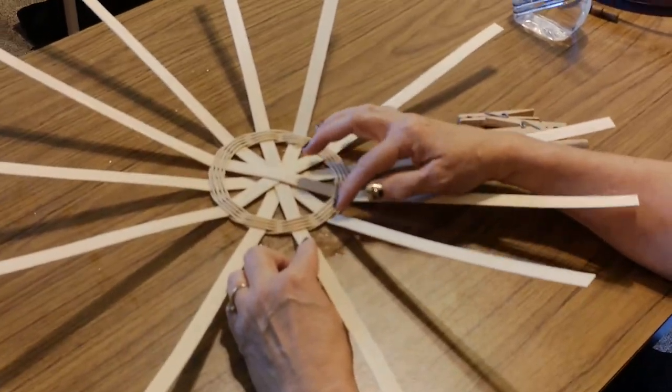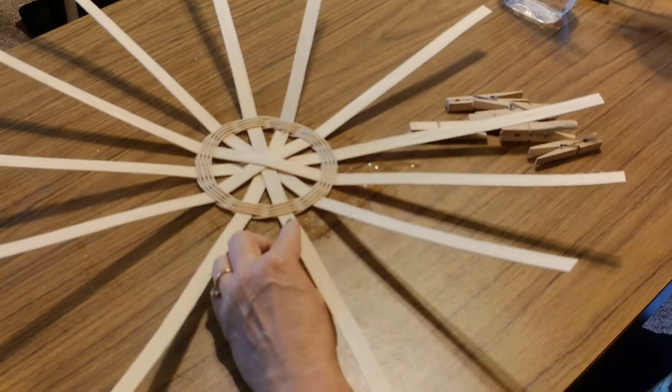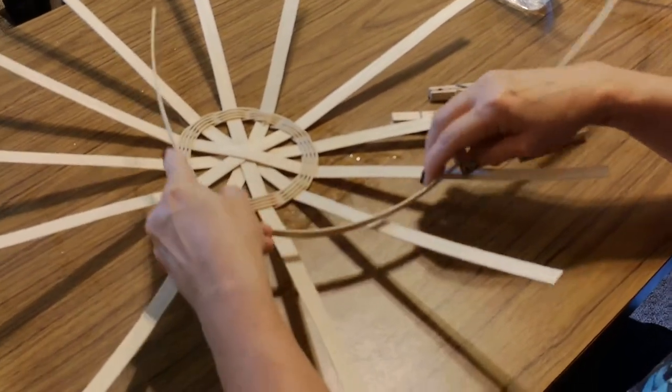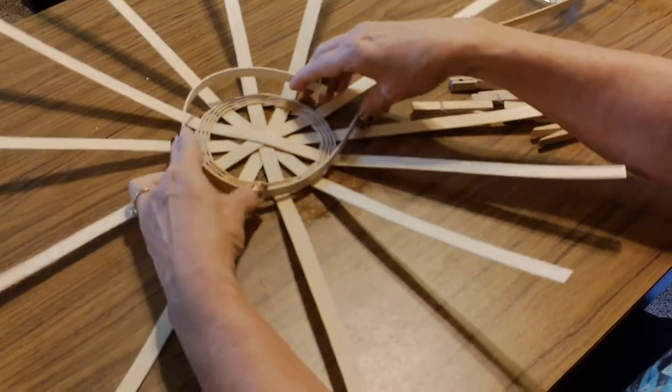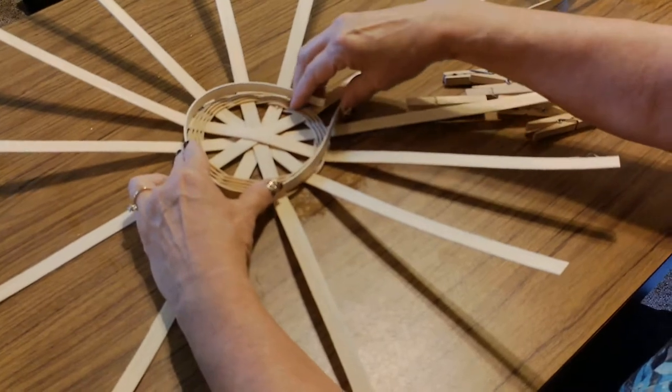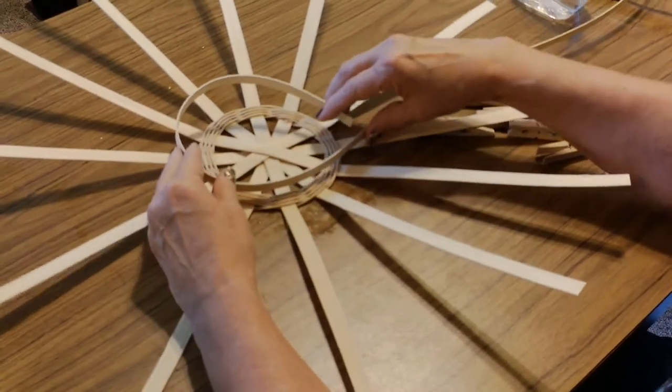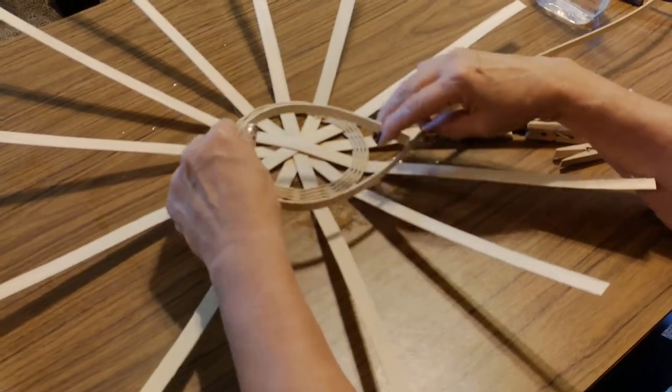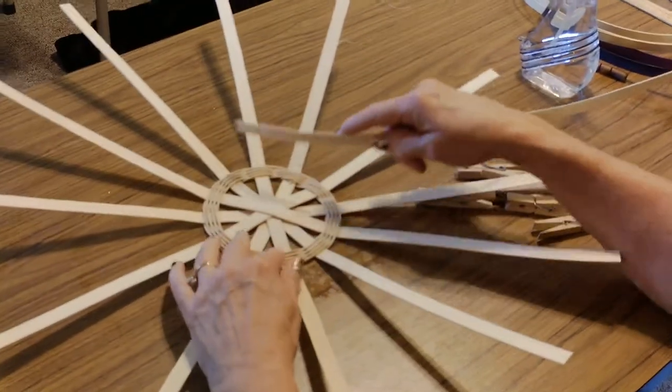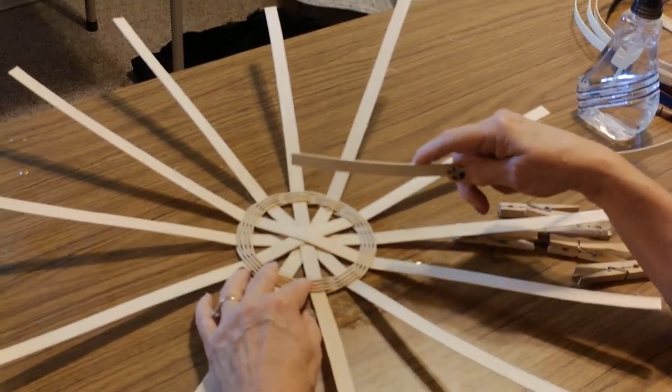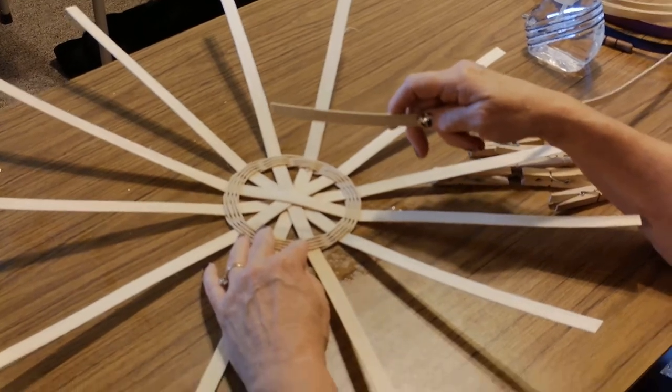What I'm going to do now is start with my weaver, and I'm going to weave it in and out all the way around the basket to start bringing up the sides. The round basket doesn't have any corners like your square basket does, so it's done just a little bit differently.